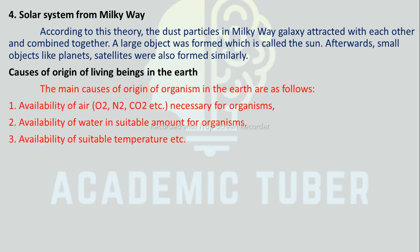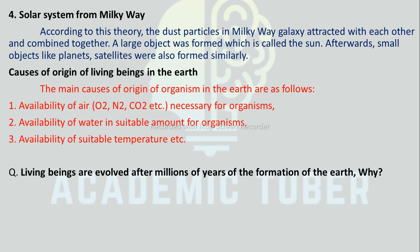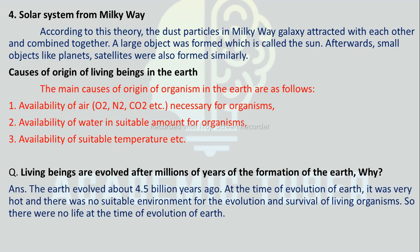Causes of origin of living beings on Earth: The main causes of origin of living organisms on Earth are the availability of air necessary for organisms, availability of water in a suitable amount, and availability of suitable temperature. Here is one important question — living beings evolved after millions of years of the formation of the Earth. Why? The Earth evolved about 4.5 billion years ago, and at the time of its formation it was very hot with no suitable environment for the evolution and survival of living organisms. So there was no life at the time of formation of the Earth.